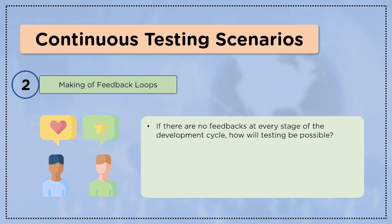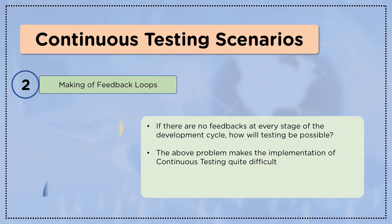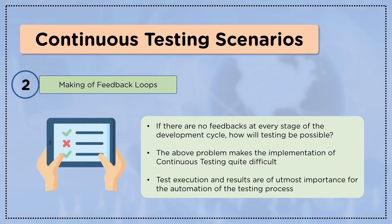The second scenario is making feedback loops. This concerns feedback loops at every stage — if there is no feedback at every stage of the development cycle, how will testing be possible? The process of continuous testing is not possible without frequent feedback loops at every stage of the development cycle. For the automation of the testing process, visibility of test execution and results is of great importance.